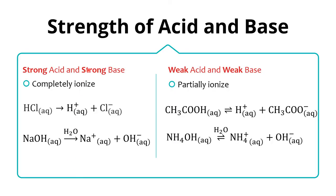We separate strong acid from weak acid, and strong base from weak base, by how much they ionize in water. Strong acid or strong base will completely ionize in water — completely ionized means 100%. You get the reactant separate into product 100%, and we show this by a one-way arrow.